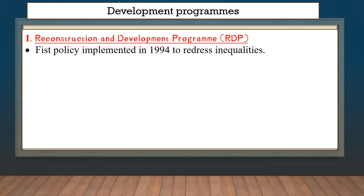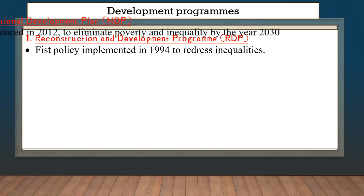Now let's look at the programs introduced to address issues in South Africa. The first one the ANC introduced was the RDP — the Reconstruction Development Programme. This policy was implemented in 1994 and was the first one to address inequality.